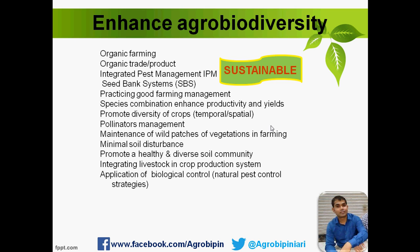Application of biocontrol — instead of applying only chemicals, we should focus on natural enemies that can control pests below the economic injury level. Alternate government policy is also essential; without government policy, it is not possible to conserve agrobiodiversity. Our government has given focus on this, as seen when the Prime Minister attended the first Agrobiodiversity Conference. Research and education should also be incorporated into course curricula from primary and secondary level to make people aware, not just through research.